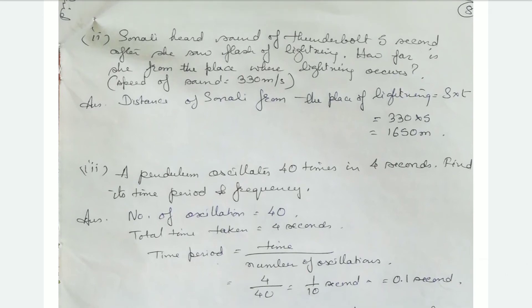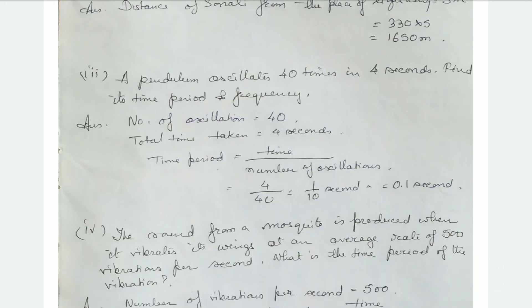Numerical 3: A body oscillates 40 times in 4 seconds. Find its time period and frequency. Number of oscillations is 40, time taken is 4 seconds. Time period equals time divided by number of oscillations: 4 divided by 40 equals 0.1 seconds.